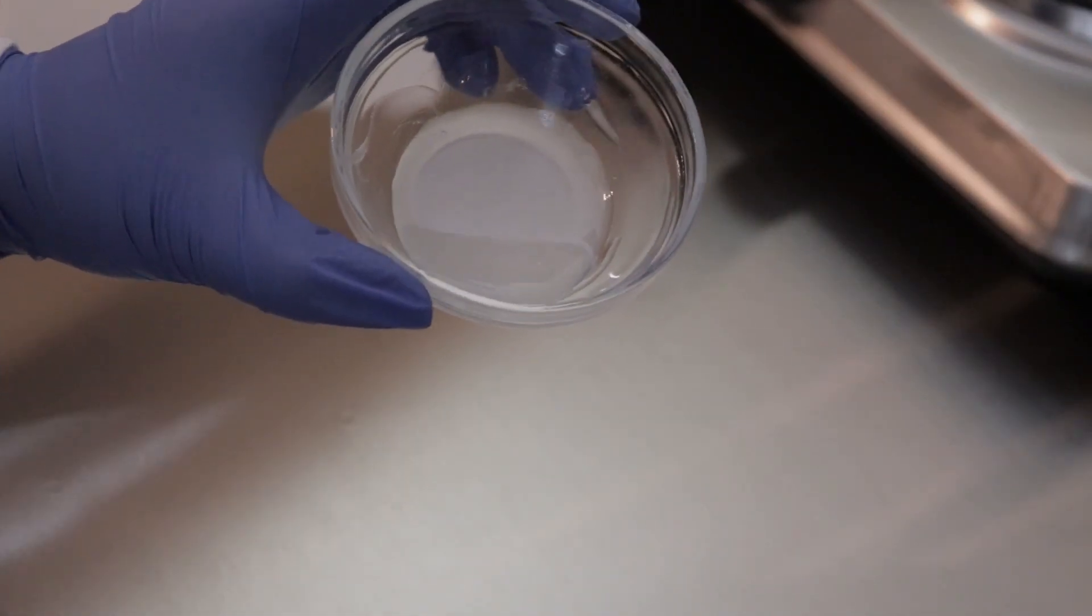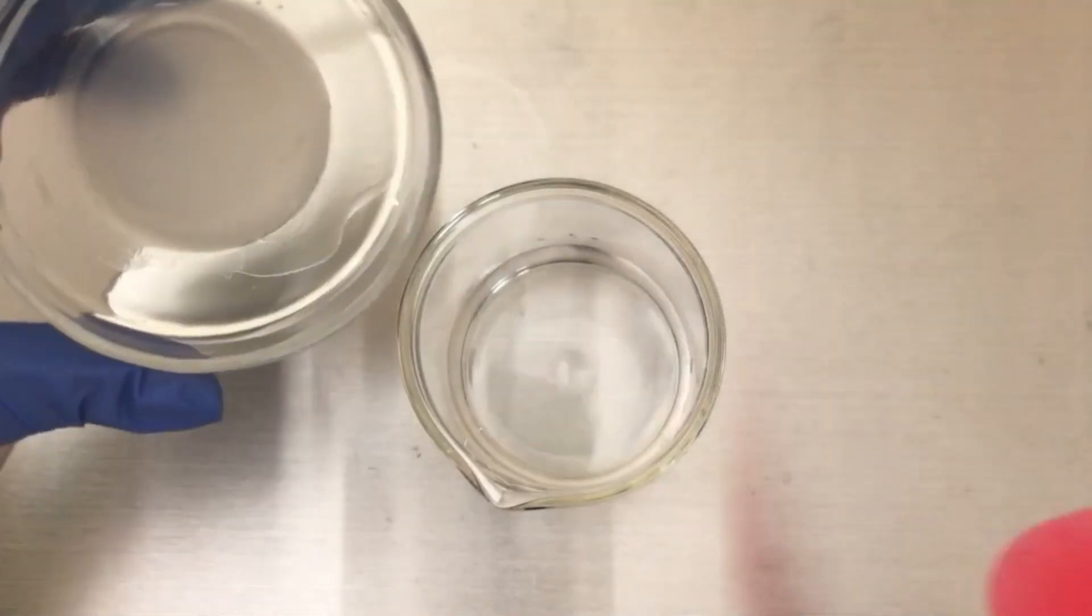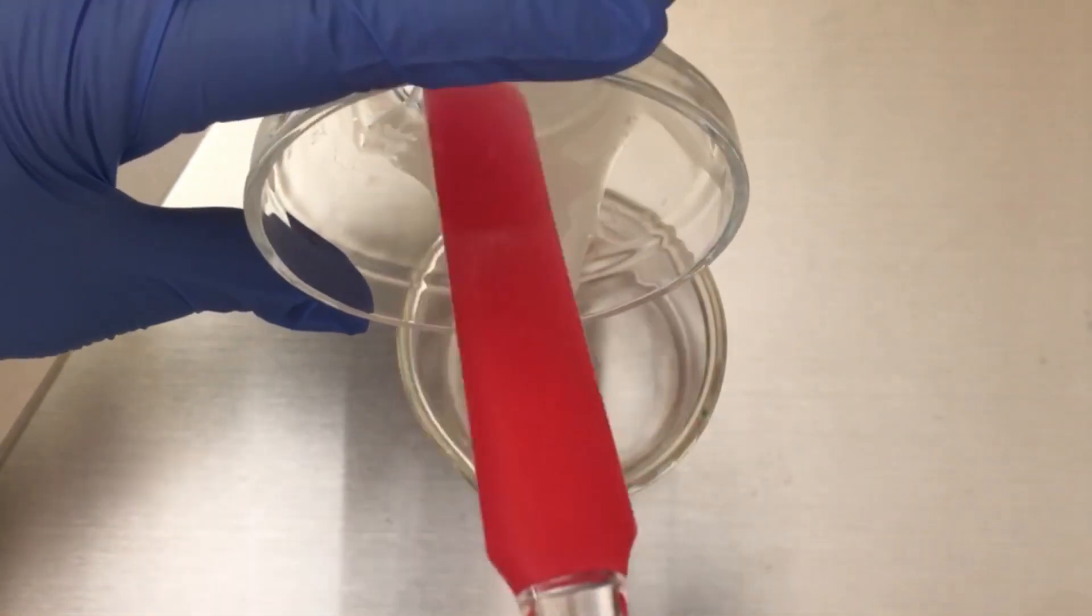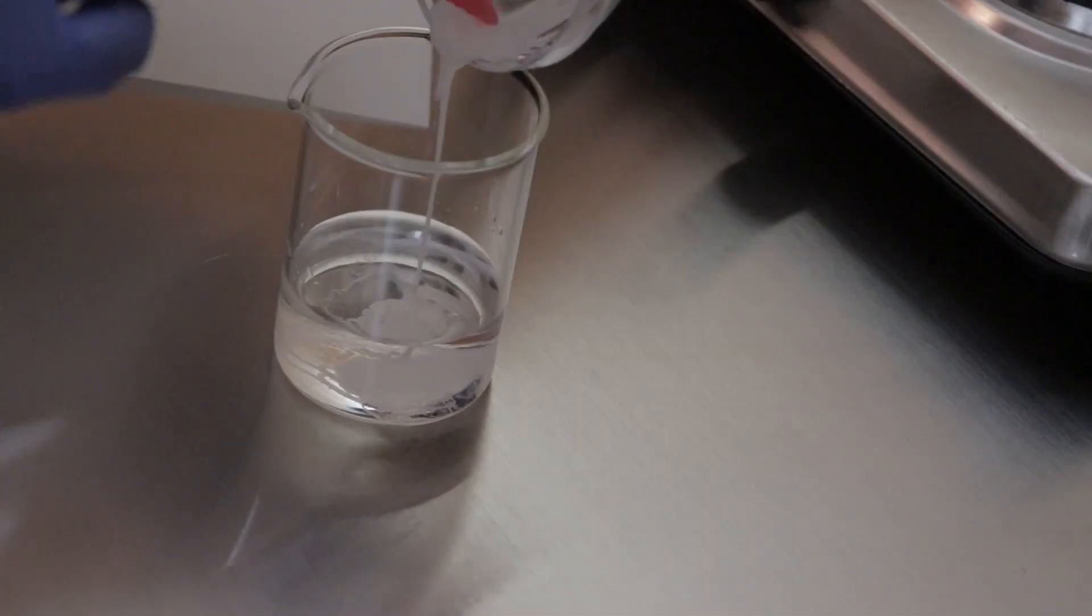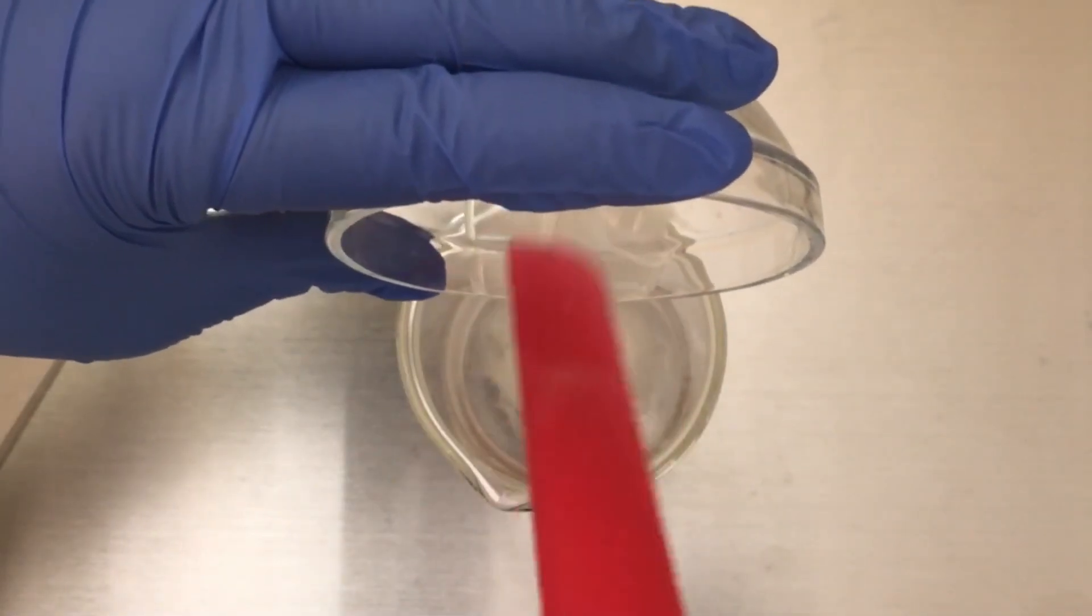Alright, so this is what your slurry should look like. And now we're going to add it into the water. And when we add it into the water, we're going to hand mix it without high shear mixing because again, we don't want to add air into the formula.